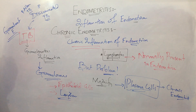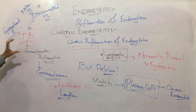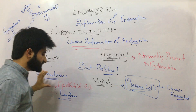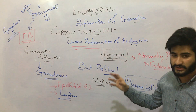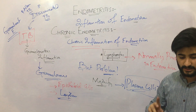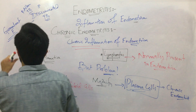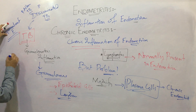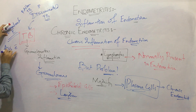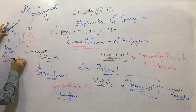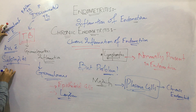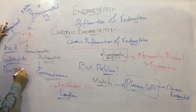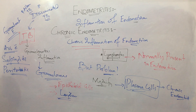Granulomatous Endometritis is due to miliary tuberculosis or disseminated tuberculosis. This leads to granulomatous inflammation in the endometrium and granuloma formation. The characteristic feature of granuloma formation is the presence of epithelioid cells and Langhans giant cells. Granulomatous Endometritis is mostly not present alone — it is associated with Granulomatous Salpingitis and Granulomatous Peritonitis.